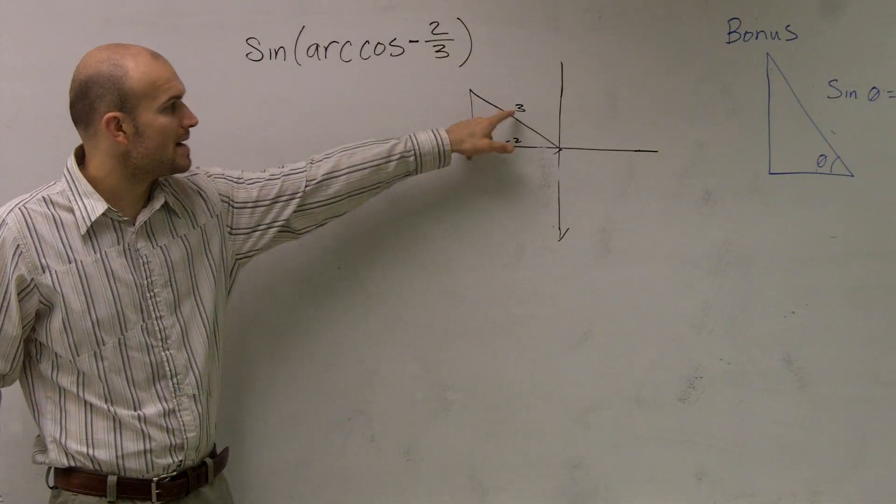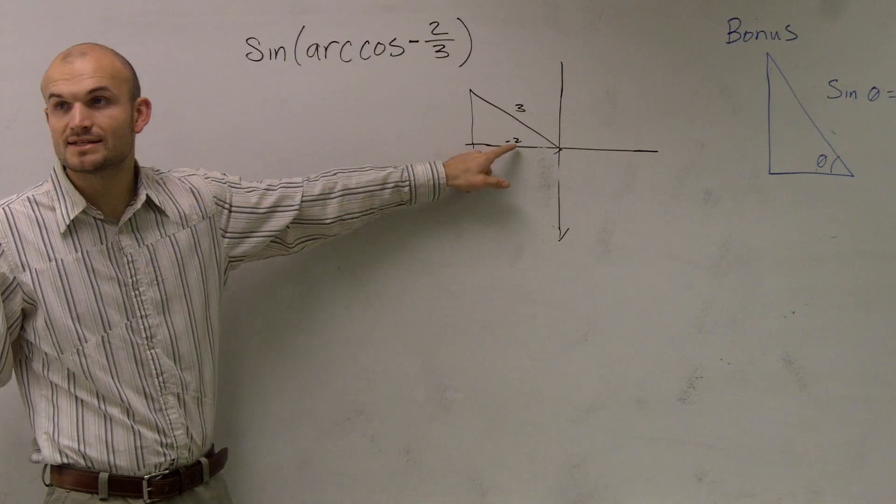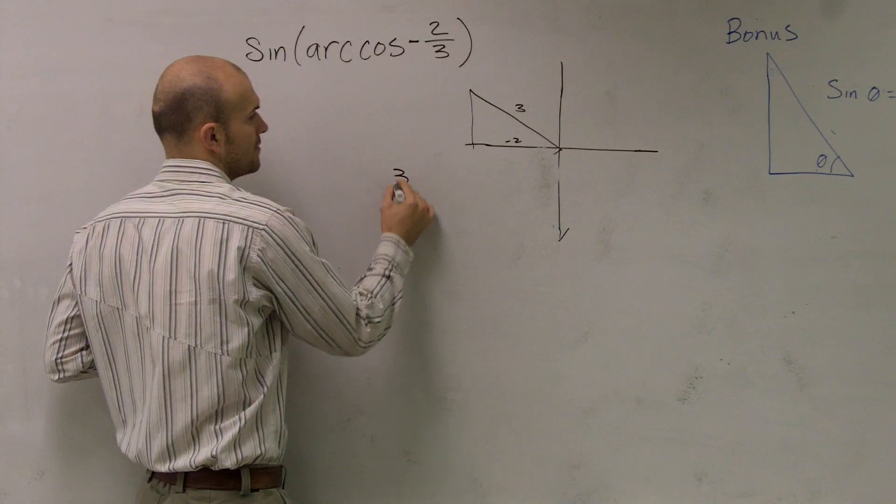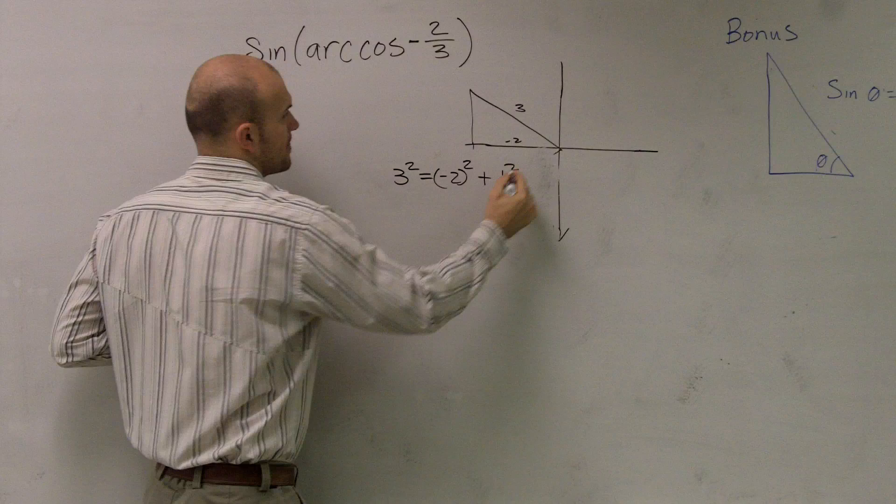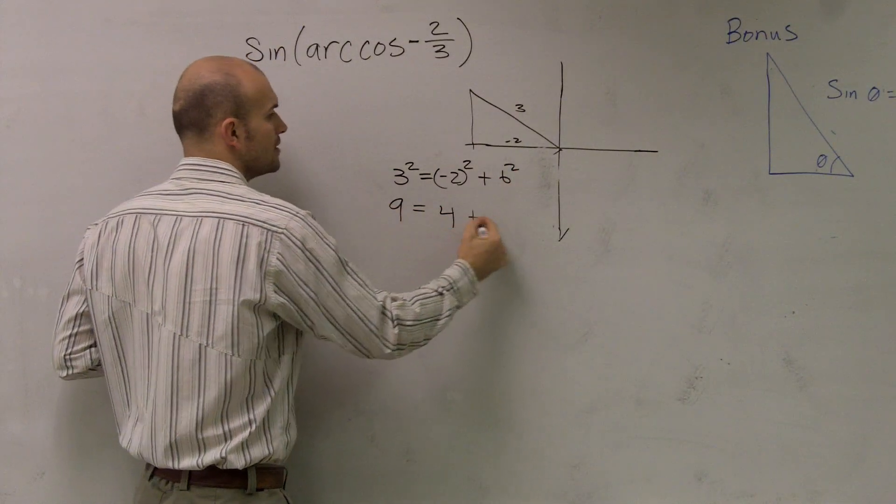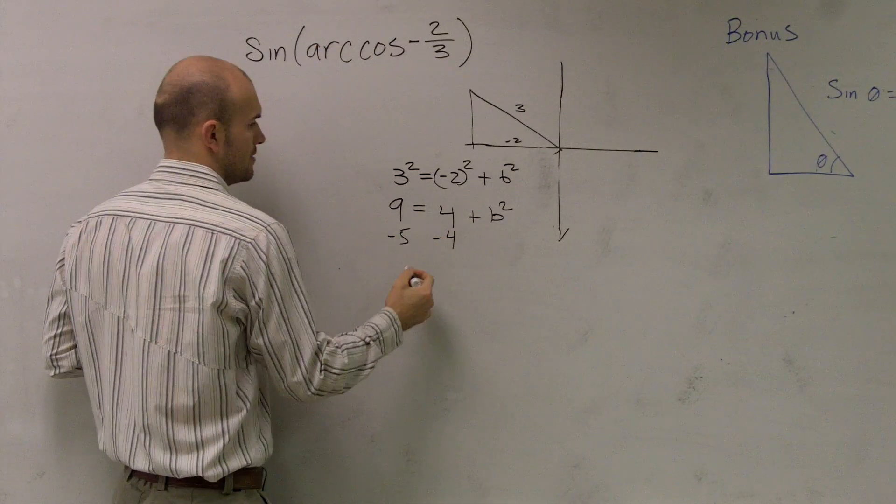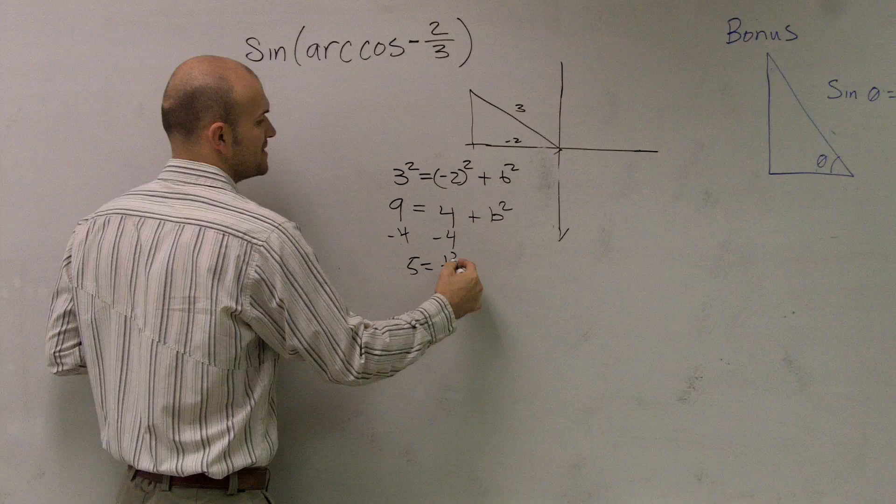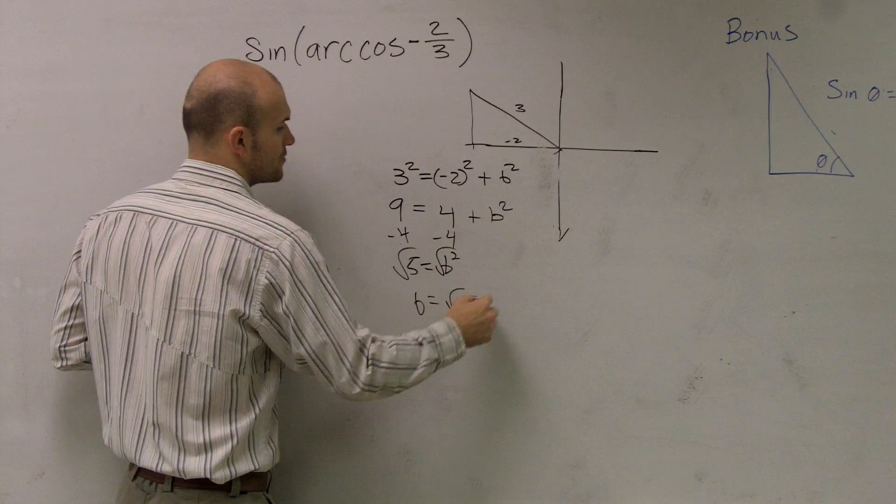So therefore, now I have my hypotenuse is 3. My adjacent side is negative 2. So now I just need to find this y value. So I have 3² equals (-2)² plus b². So I get 9 equals 4 plus b², minus 4 minus 4. 5 equals b². Take the root. b equals √5.